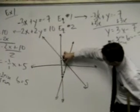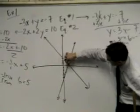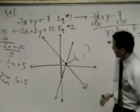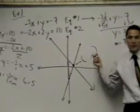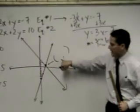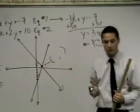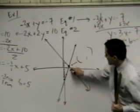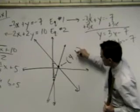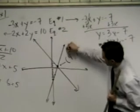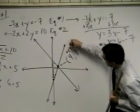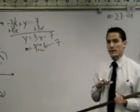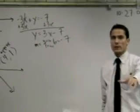My solution is where the two lines intersect. In the next lesson we're going to learn how to find this exact point, but right now we're just going to approximate. I would say this is probably around 4 and 1. This is an approximation — it means it's not exact, but it's my best guess.